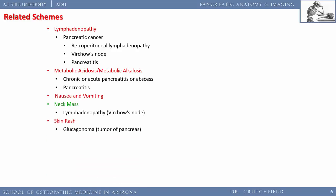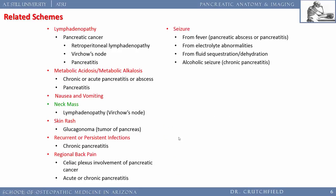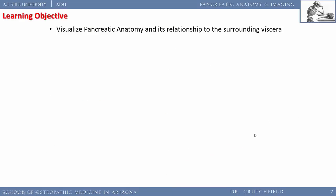A rare glucagonoma secretes glucagon and can cause a distinctive skin rash. Recurrent pancreatitis, back pain from celiac plexus involvement, seizures from alcohol-related dehydration and electrolyte abnormalities, trauma from bicycle handlebar injuries, fluid sequestration causing anemia, and bleeding if a pseudocyst erodes into the splenic artery — all can lead to death. Weight loss and weakness are among the many schemes the pancreas is related to.